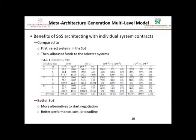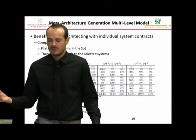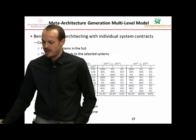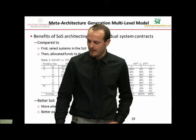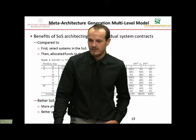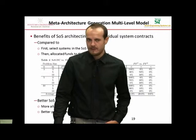What's the whole idea of this multi-level optimization model? Without our approach, an architect would simply first select the systems, then build contracts with them — a sequential approach. What we do instead is integrate the contracting decision within architecture generation. When we compare our integrated approach to the sequential architecture-then-contract approach, our approach provides more alternatives for starting negotiation, and the alternatives suggested have better performance, lower cost, and lower deadline. So our approach is efficient for solving meta-architecture generation problems.